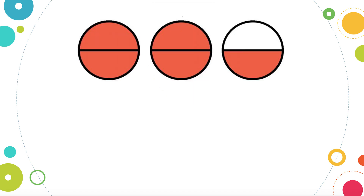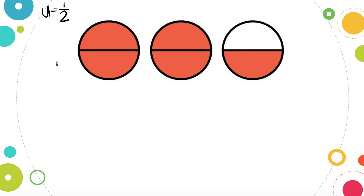Let's take a look at a fraction that is larger than one. We always want to start by identifying our unit fraction. Remember, our unit fraction has a one as the numerator, but to find the denominator we find how many pieces are in the whole. I see there are multiple wholes here, so I'll focus on the first one — there are two pieces in the whole. So our unit fraction is one-half.